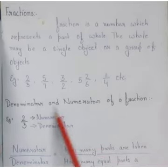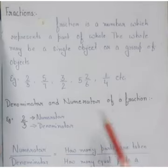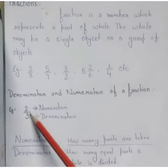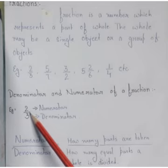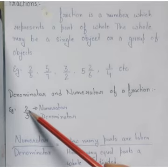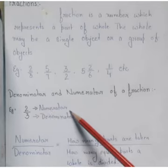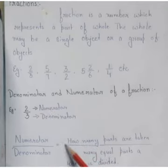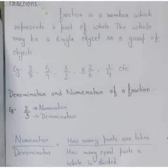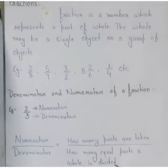Next we are looking at denominators and numerators of fractions. I have taken the example of two by three. This line is known as your line of division. The number below the division line is known as your denominator, and the number above the division line is known as your numerator. Numerator means how many parts are taken — whether you have shaded them or not. And denominator means how many equal parts a whole is divided into.